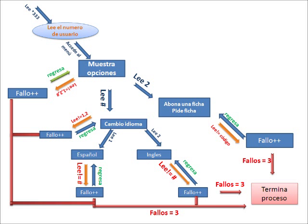Las flechas rojas indican que el proceso va hacia el fin. Esto ocurre cada vez que se acumulan 3 fallos. Un fallo puede ocurrir cuando no presionamos la tecla correcta y el sistema no lo lee bien, o cuando pasan 4 segundos. Al acumularse 3 fallos, se salta y termina el proceso.